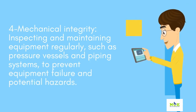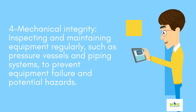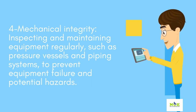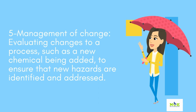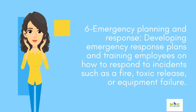4. Mechanical integrity: inspecting and maintaining equipment regularly, such as pressure vessels and piping systems, to prevent equipment failure and potential hazards. 5. Management of change: evaluating changes to a process, such as a new chemical being added, to ensure that new hazards are identified and addressed. 6. Emergency planning and response: developing emergency response plans and training employees on how to respond to incidents such as a fire, toxic release, or equipment failure.